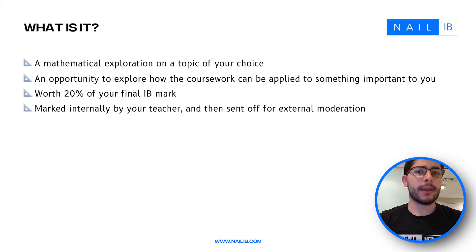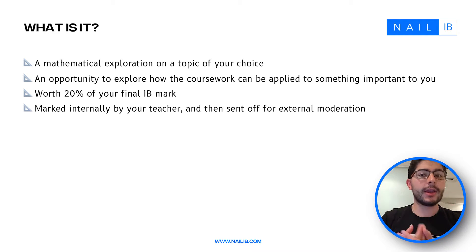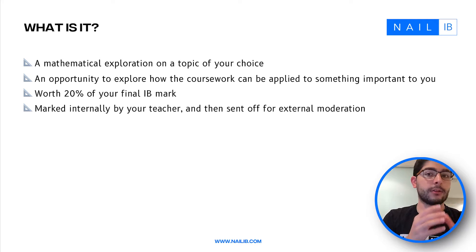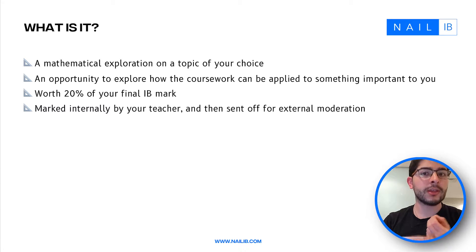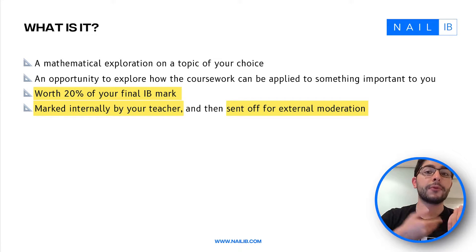The IA is a mathematical exploration and you can choose pretty much anything you want — any area of interest. It's an opportunity given by the IB to apply the stuff you've learned in class to something that interests you or is important to the world. This is a hand-in assessment worth 20% of your final mark. It is marked internally by your teachers but also sent externally for the IB to review and moderate.